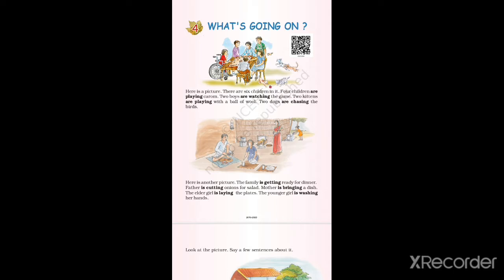In the picture there are two pictures given in the book. We are going to read and learn what each picture is describing. Here is a picture: there are six children in it. Four children are playing carrom, two boys are watching the game, two kittens are playing with a ball of wool, two dogs are chasing the birds.